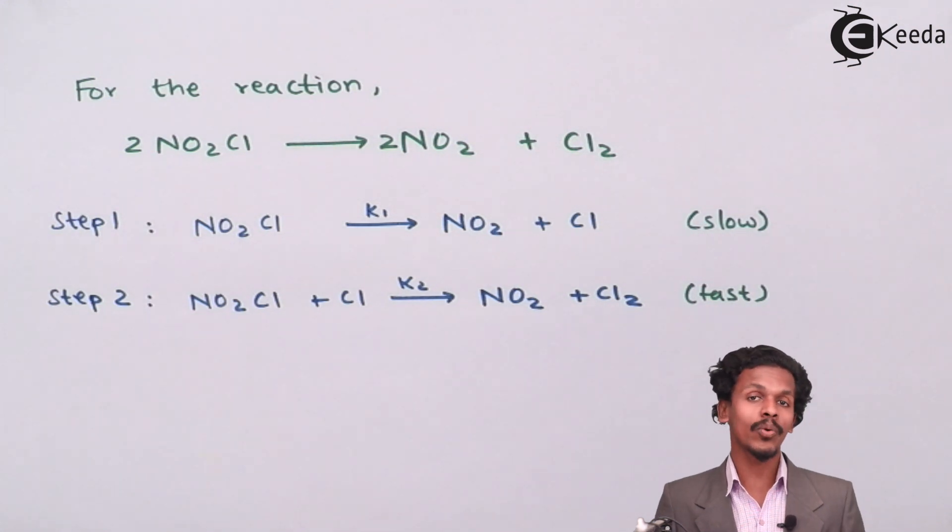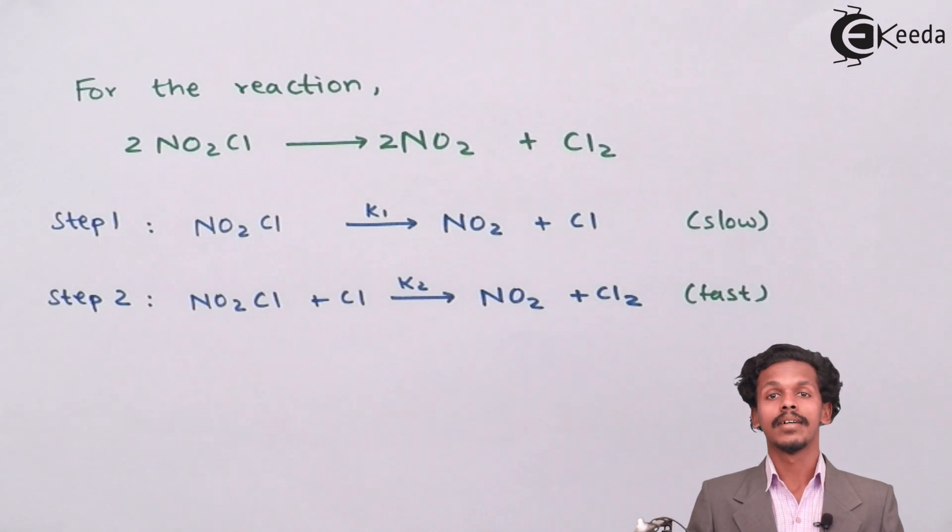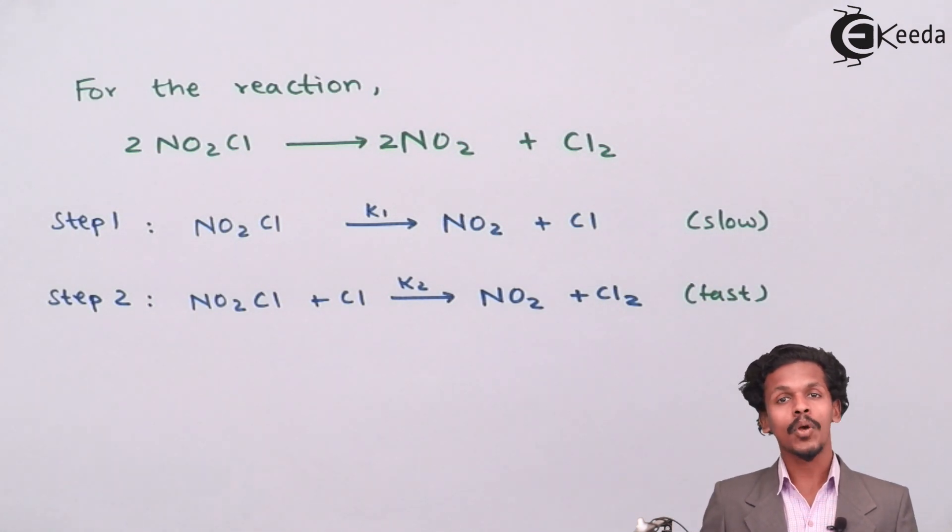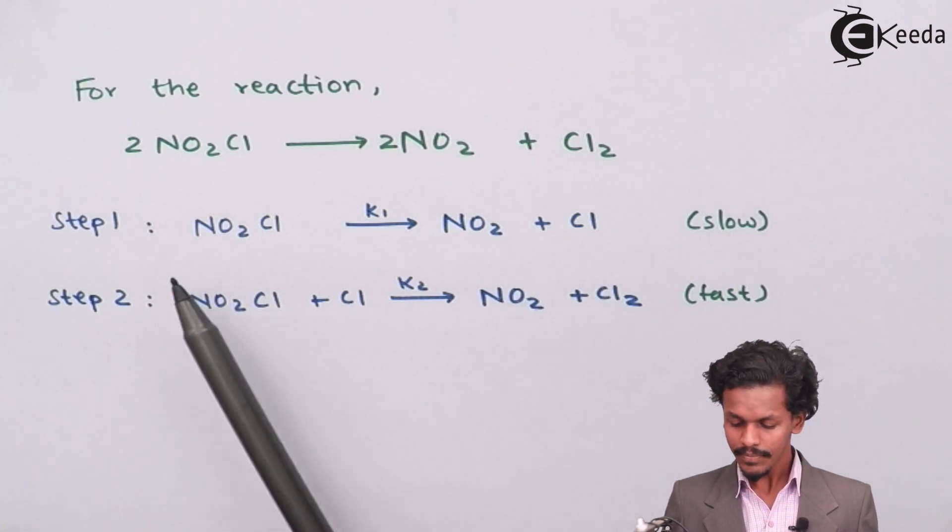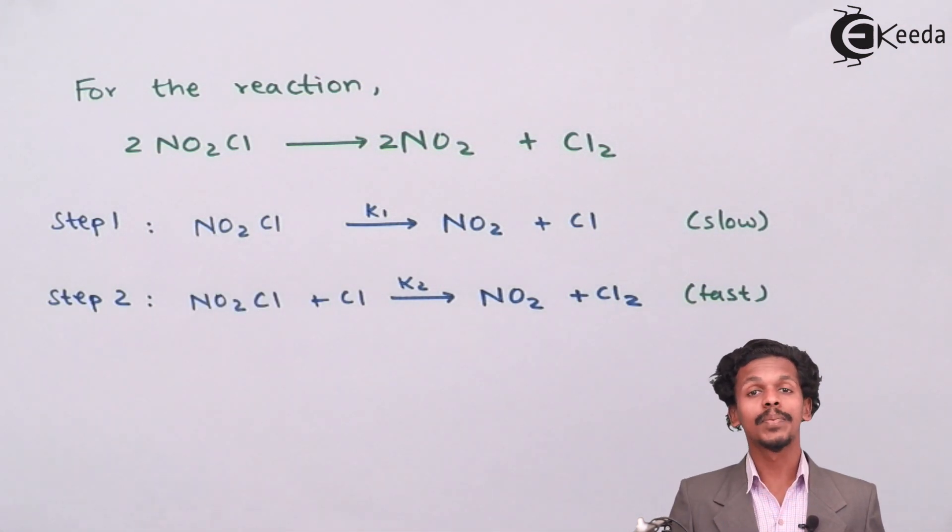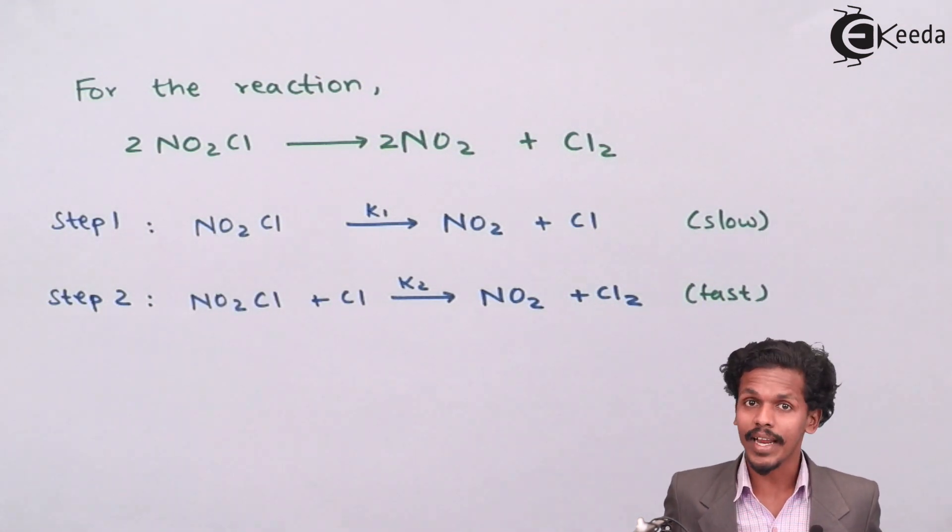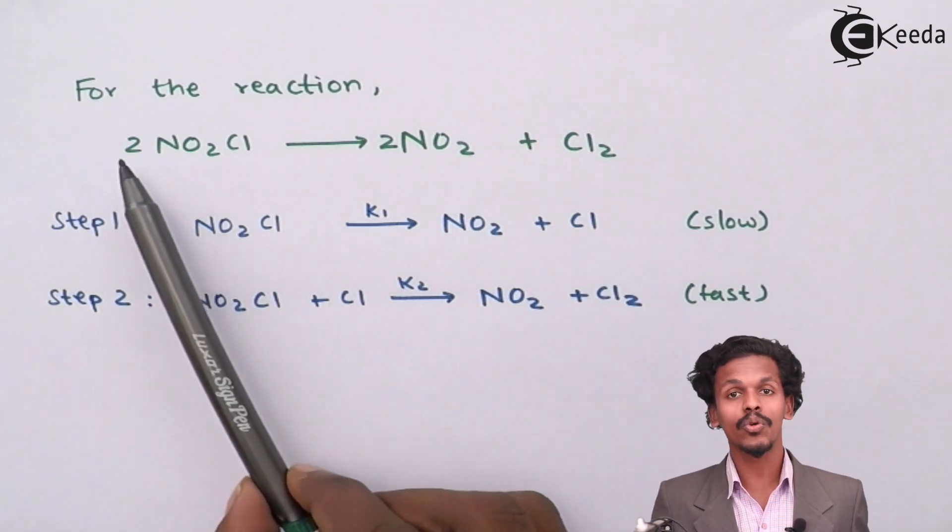And because of that only we could determine what would be the order of reaction also. So since it is an elementary reaction and as you can see it is dependent only on one mole of NO2Cl, which means it is a first order reaction. In spite of we are seeing in the overall reaction is having two molecules of NO2Cl involved.